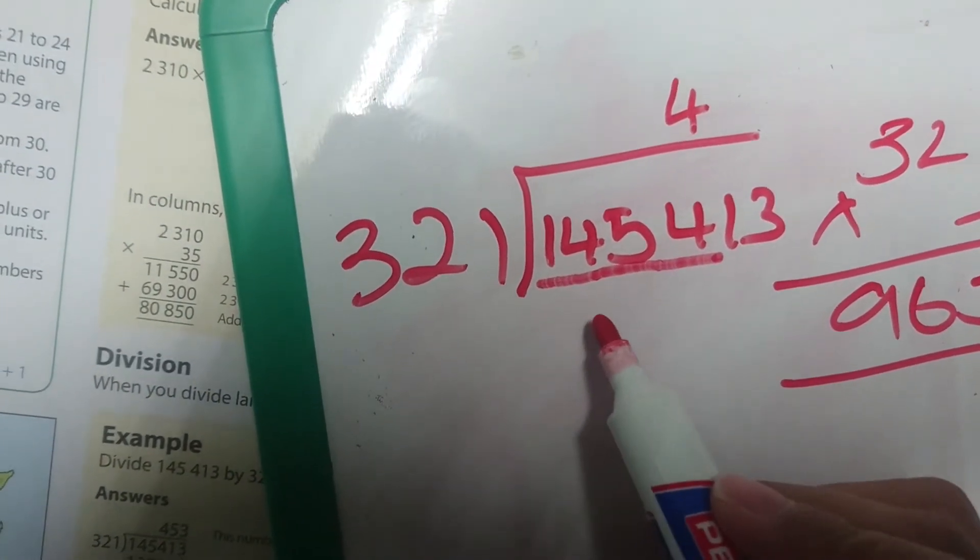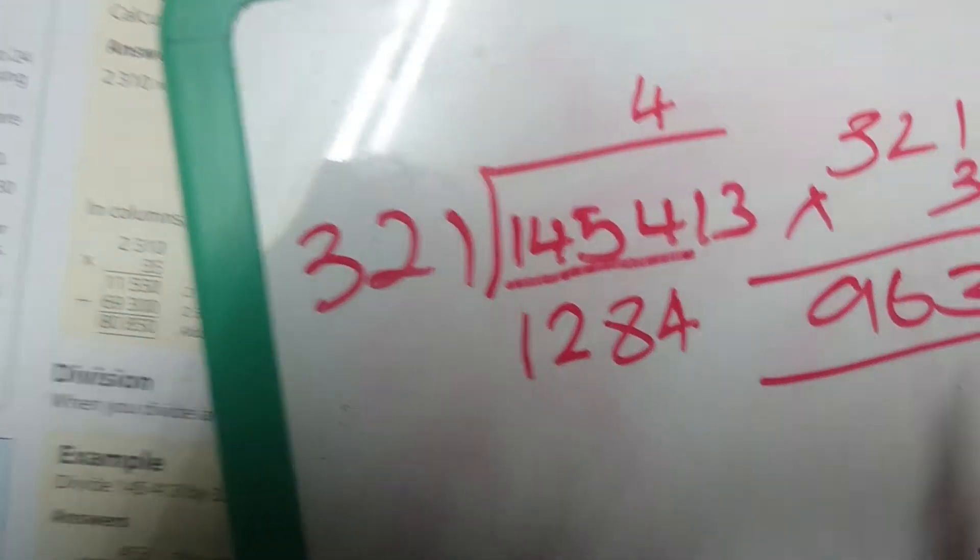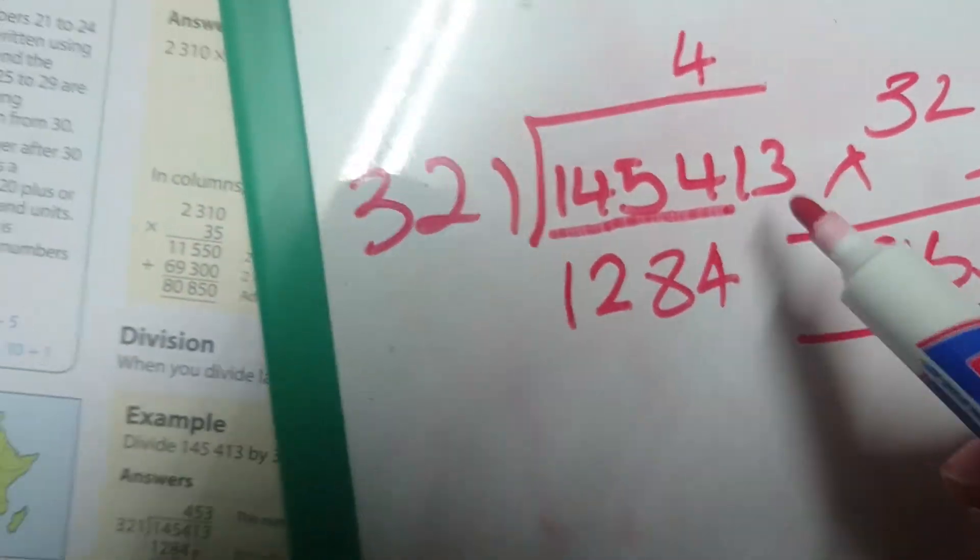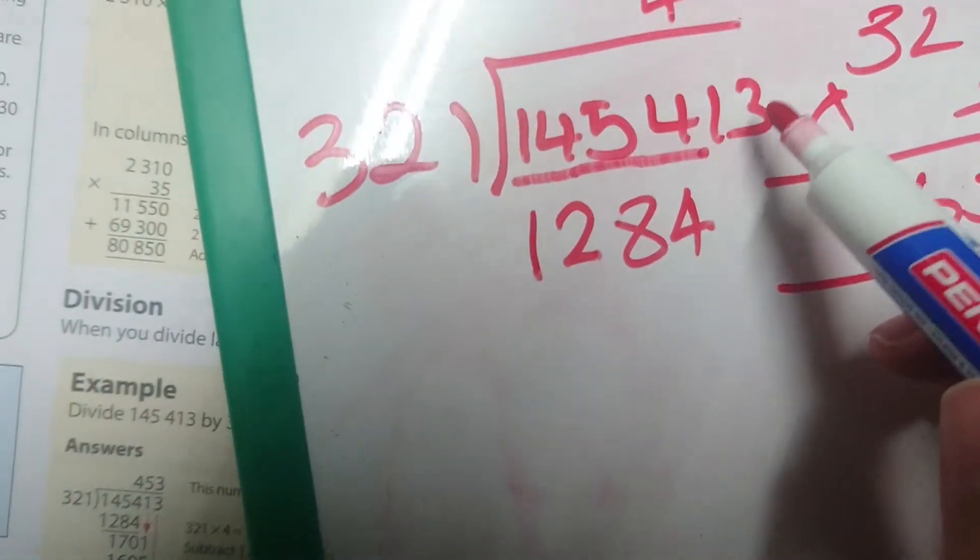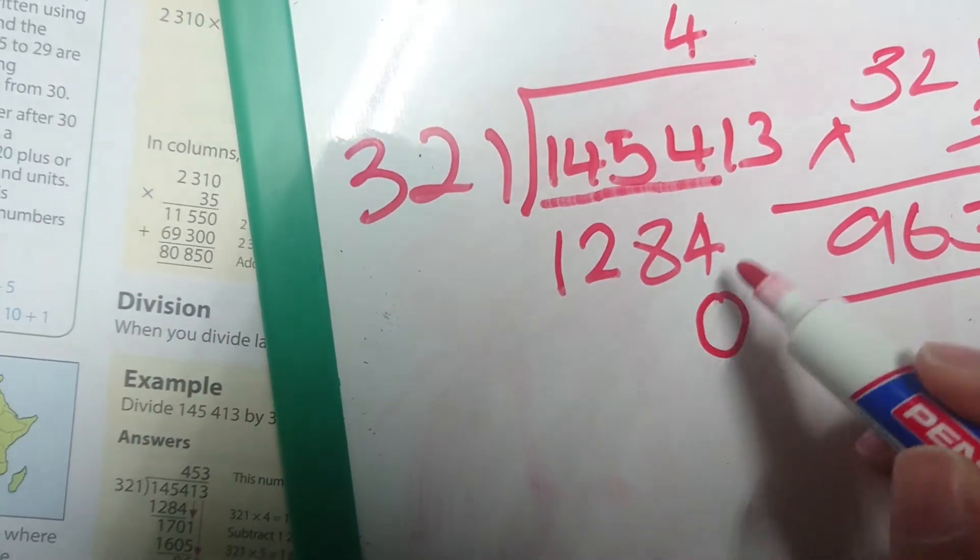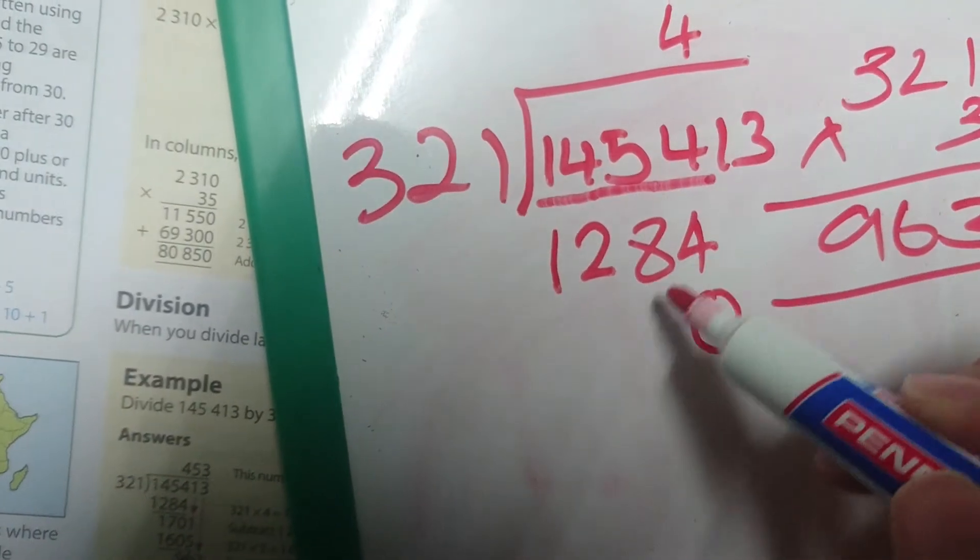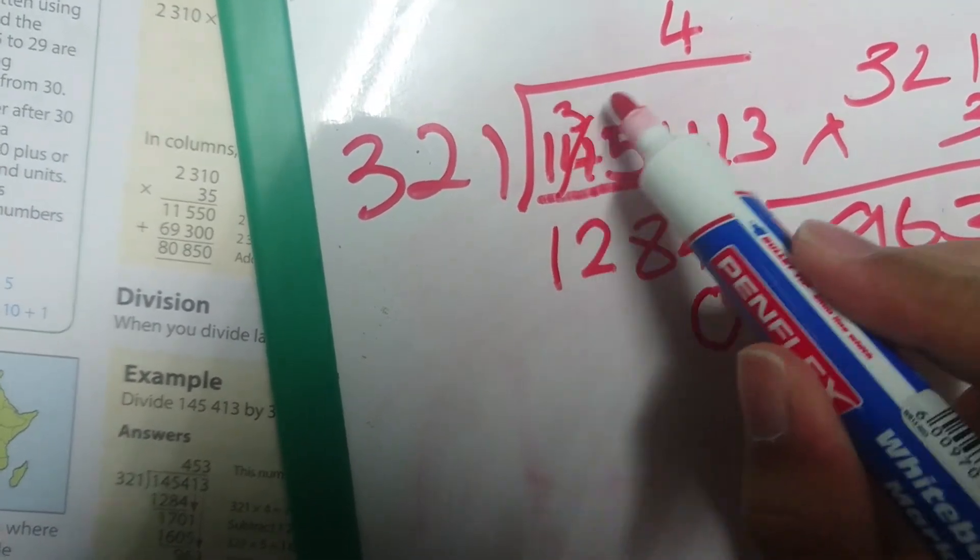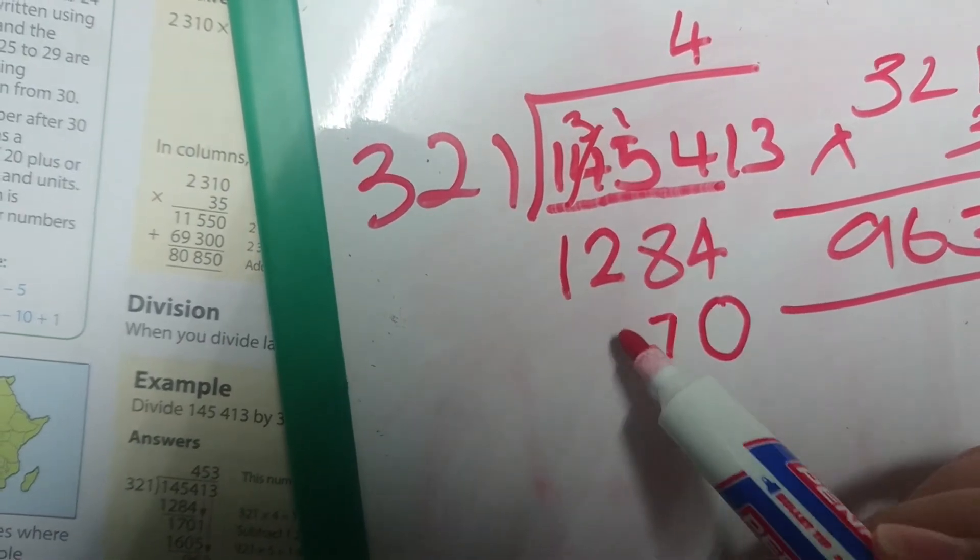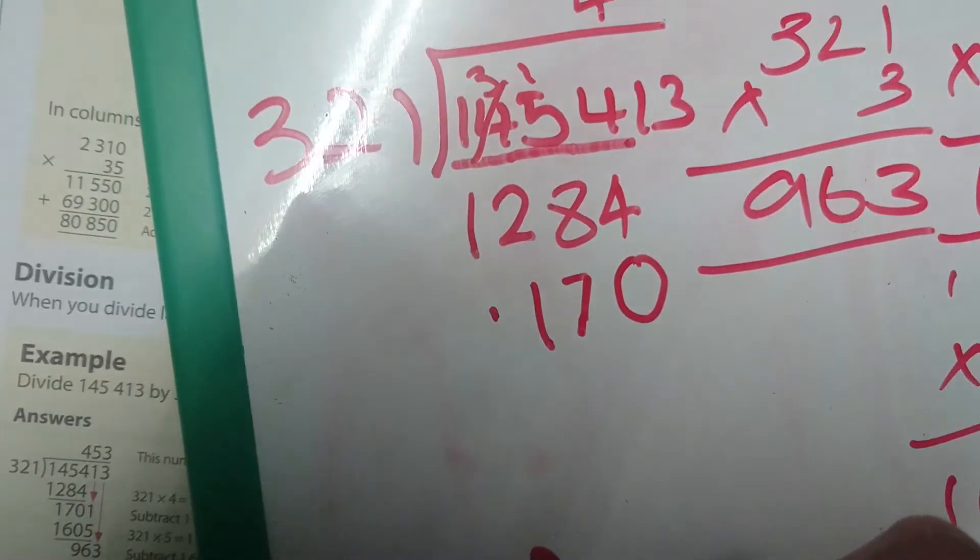1,284. Now we do our subtraction. We are going to say 4 minus 4 is 0, 5 minus 8, 5 cannot minus 8, let's borrow. 15 minus 8 is 7, 3 minus 2 is 1, and 1 minus 1 is 0. We do not have to put the 0 in the beginning of the number.